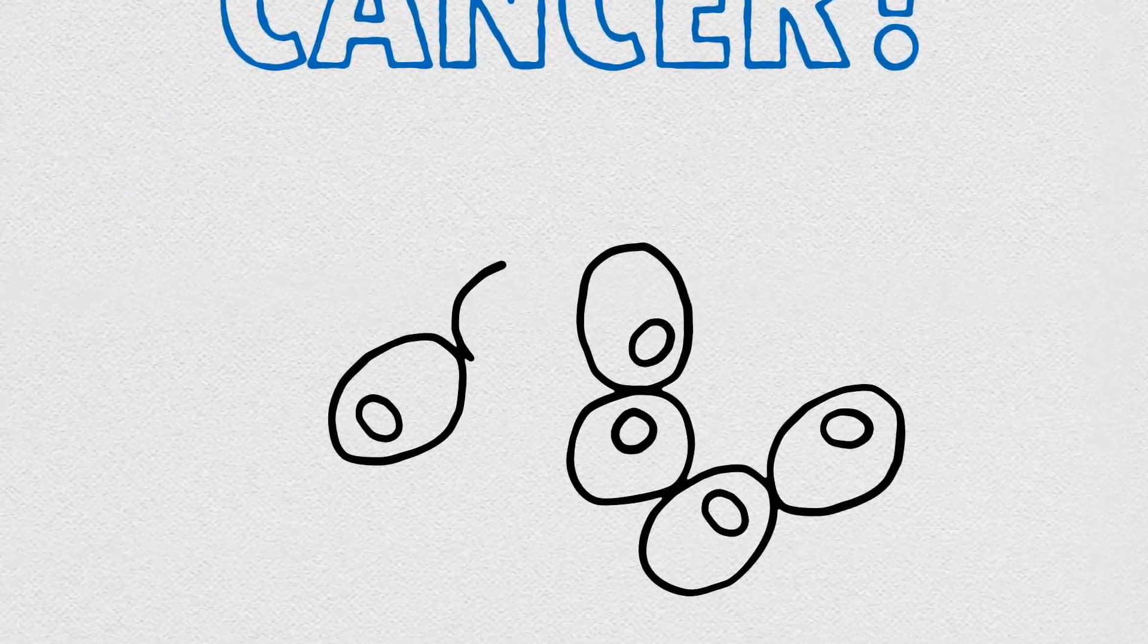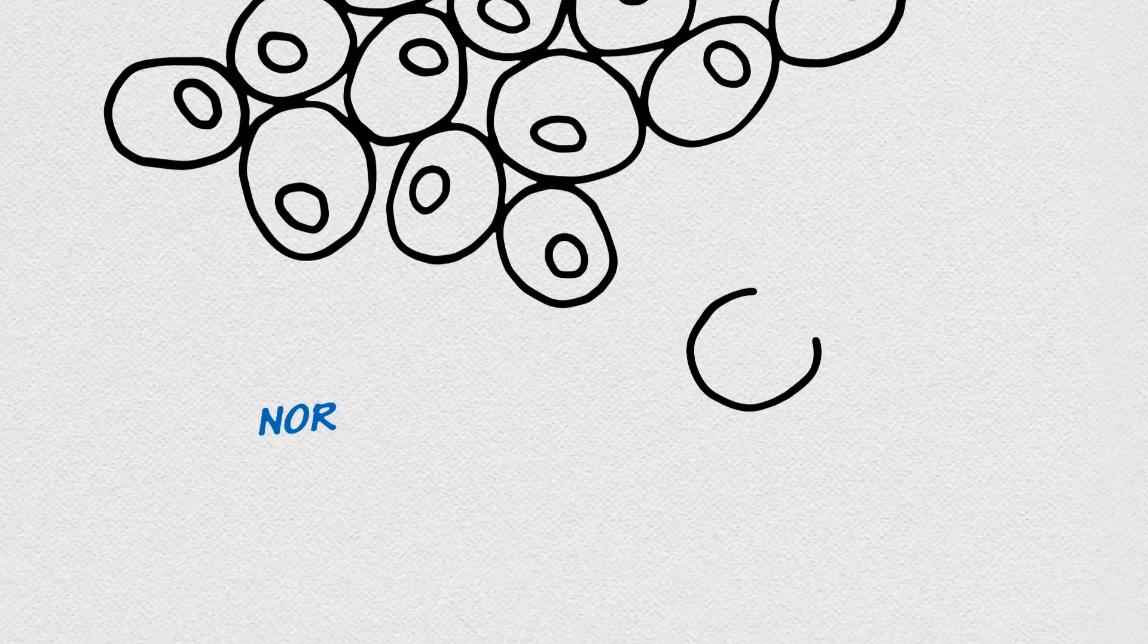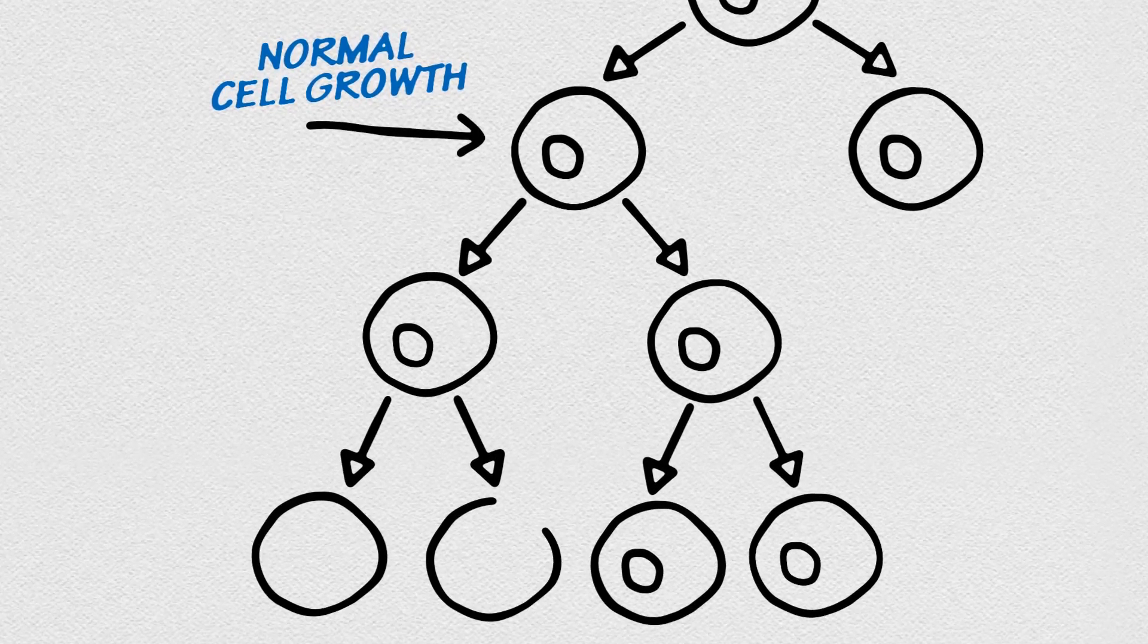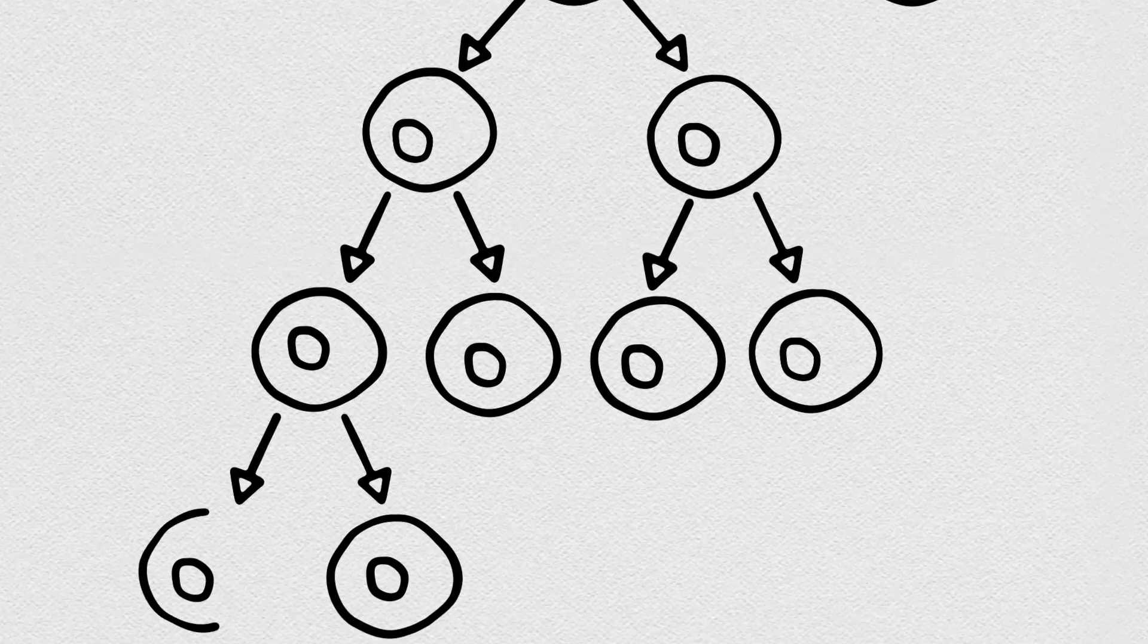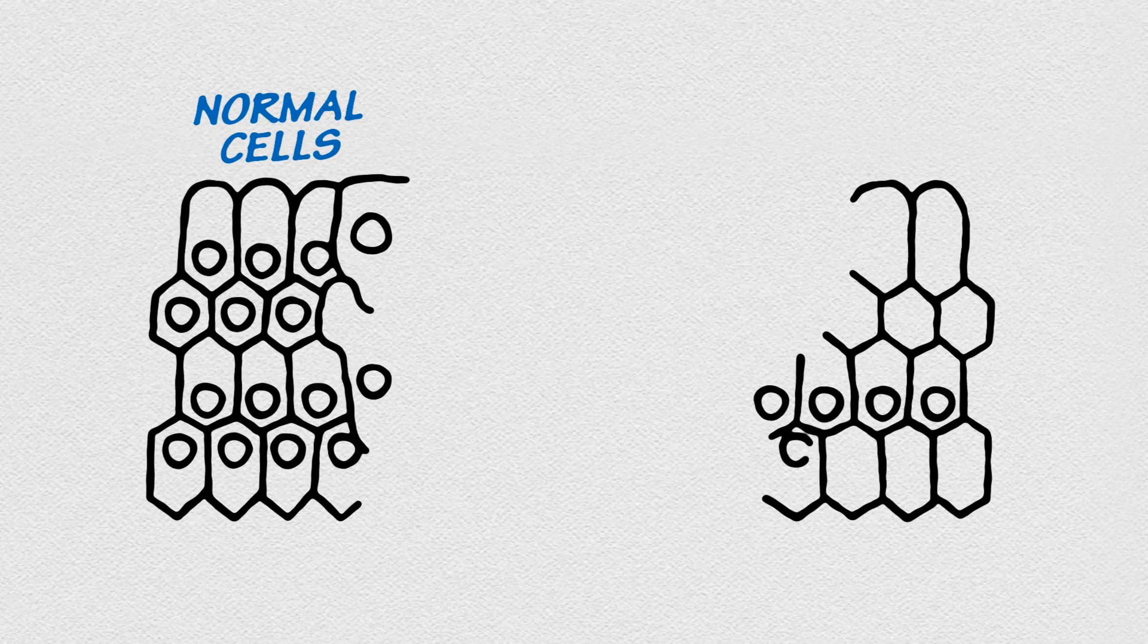Our bodies are made up of millions of cells. They form tissue, organs, muscles, and bones. Genes tell these cells to grow, tell them what to do, and when it's time for the cells to die. But sometimes, the instructions short-circuit, and things go wrong. That's cancer.